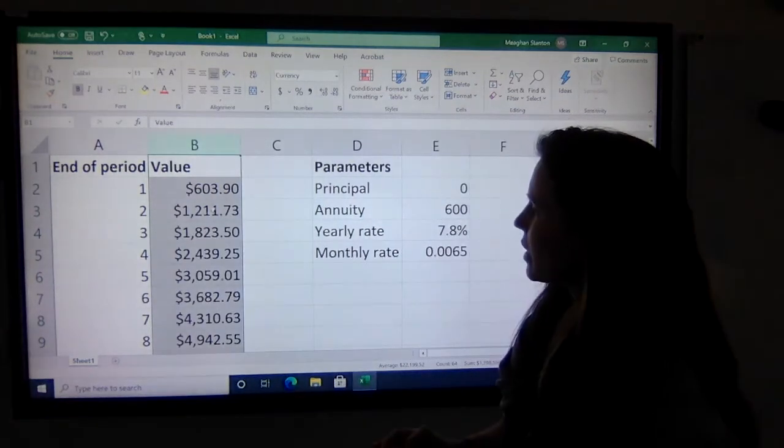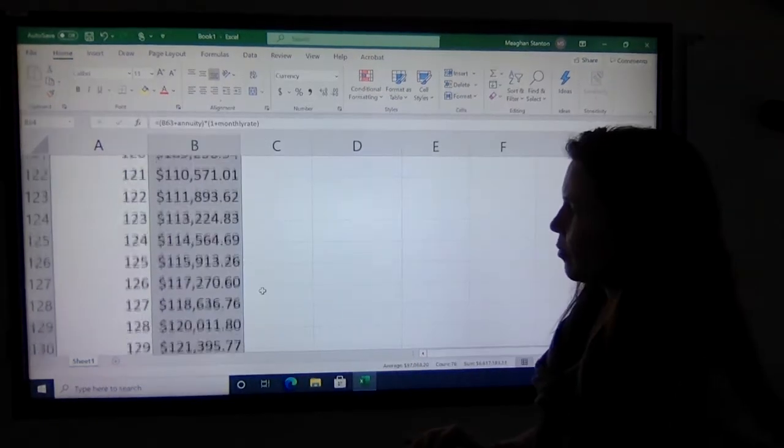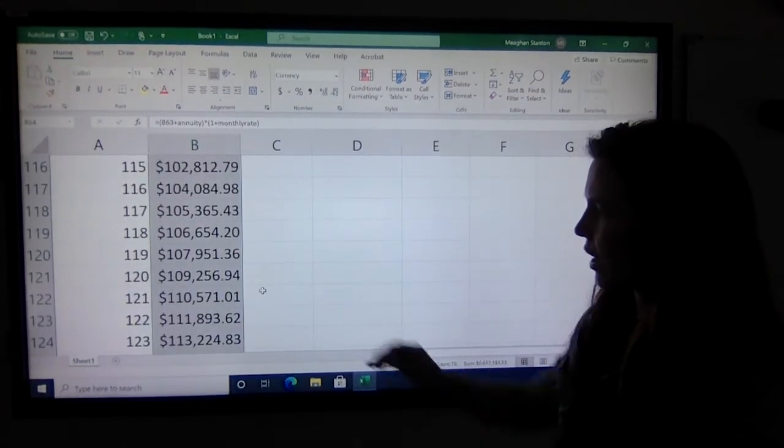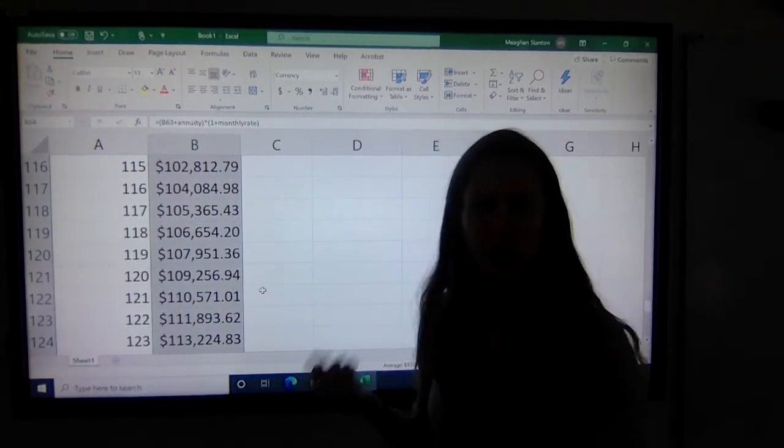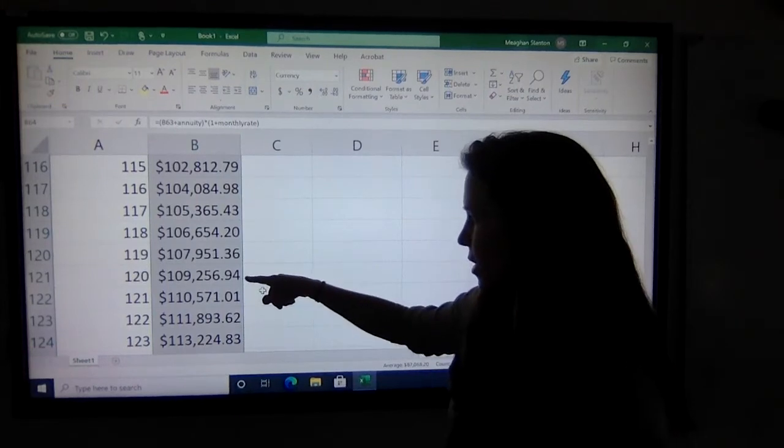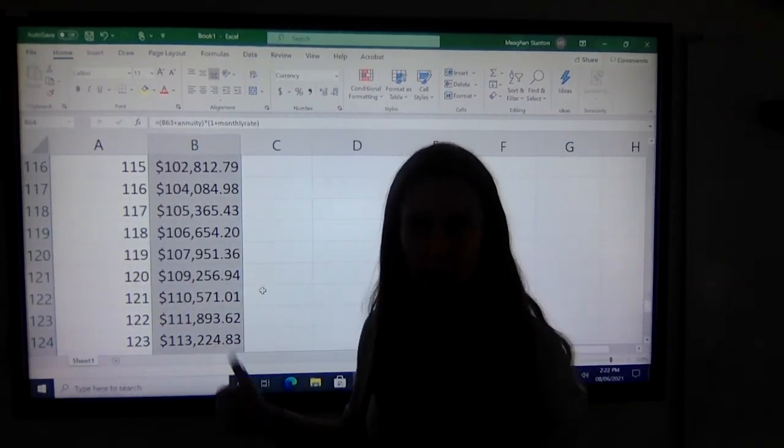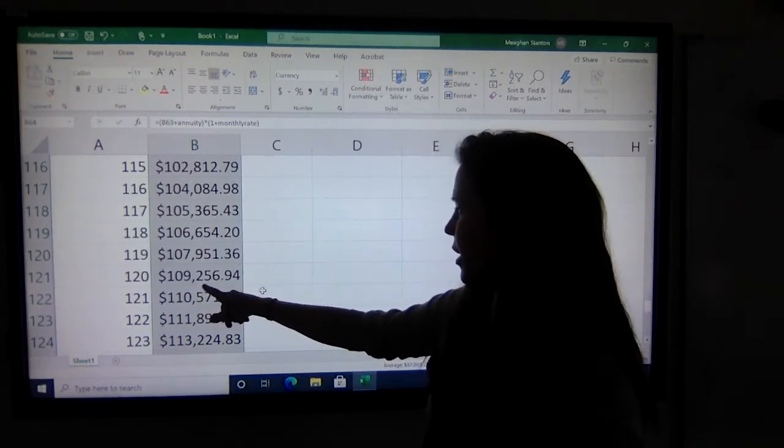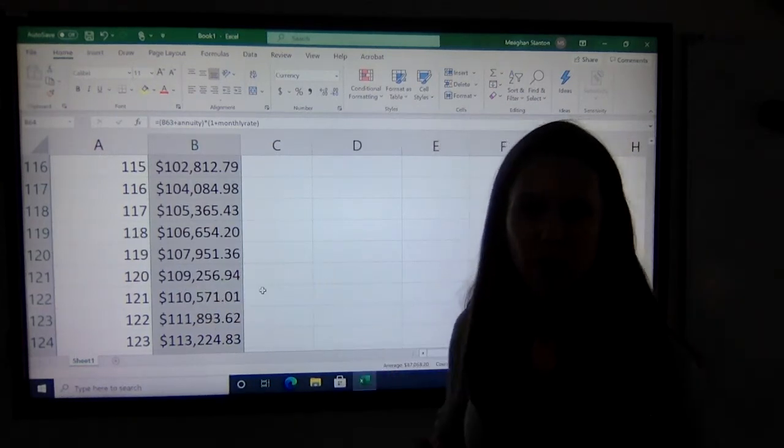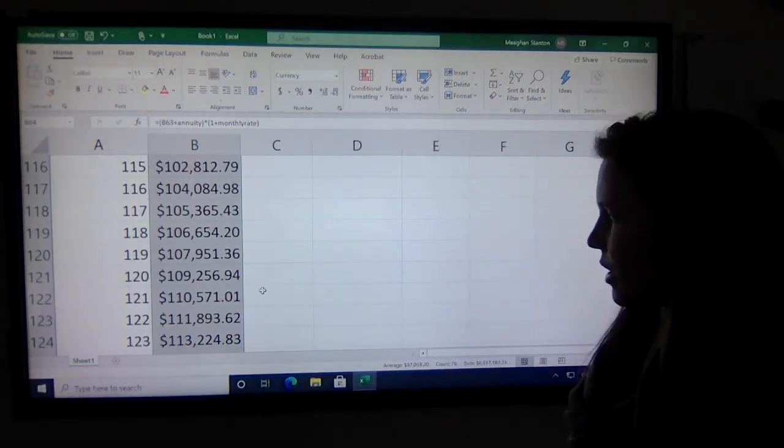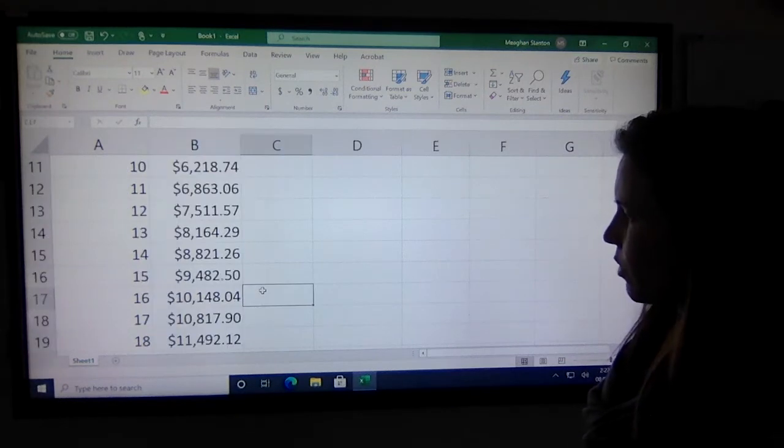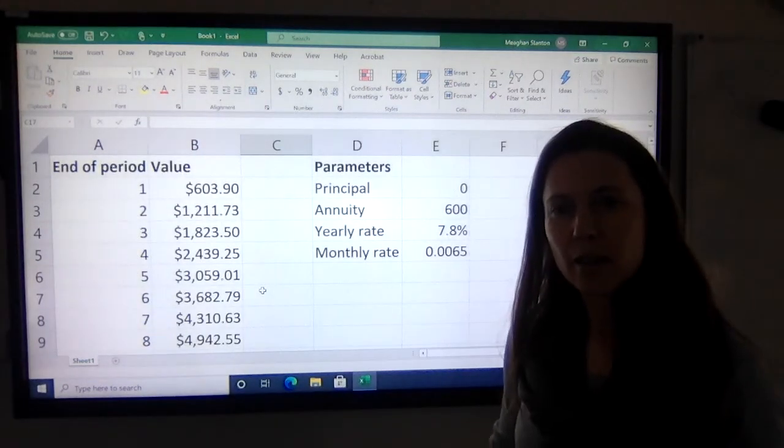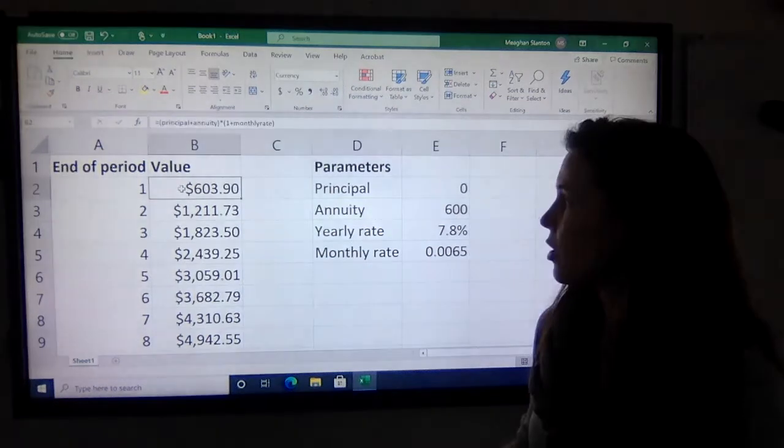Now we can easily see the answers. We can scroll down to 120 months, which was the question that we just answered, and we can see that 120 time periods—which was actually six years in this example—would be $109,256.94, which is the same answer that we worked out by hand.